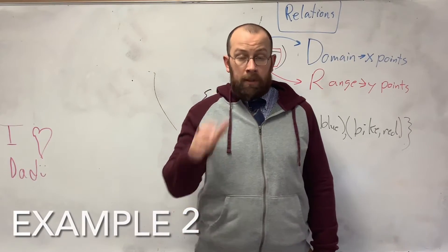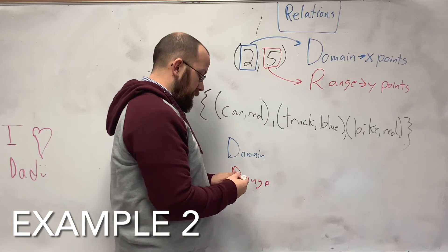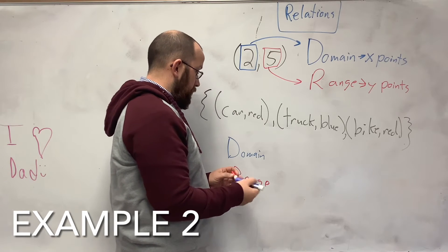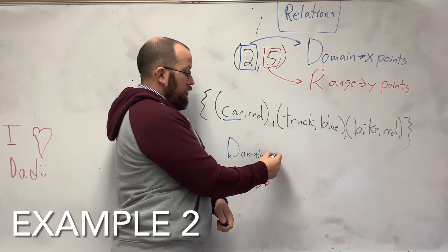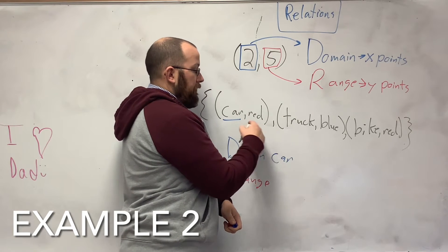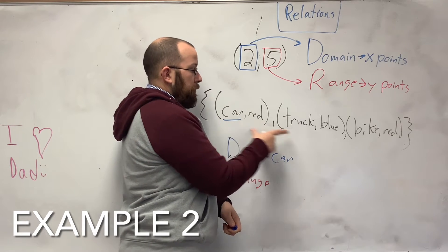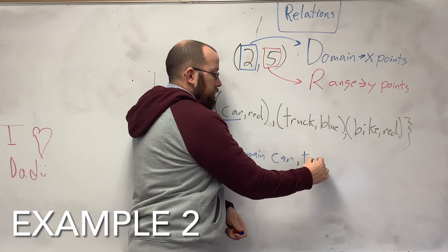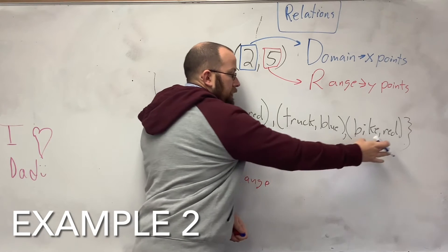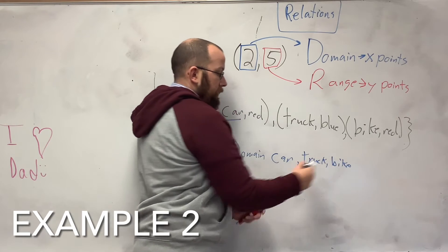Example number 2. Here, we have a set of relations and a set. What is my domain? Well, my domain is still just my first point, my x, or my domain in each point. So that's relation truck. This one, bike.